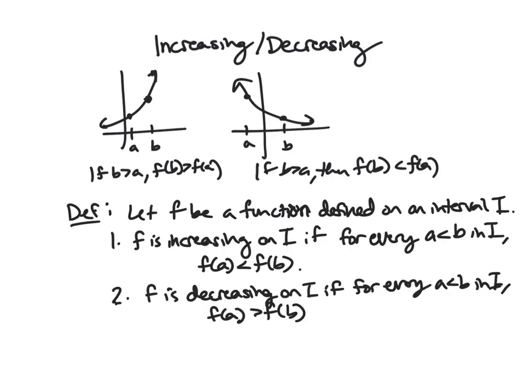So here we'll just collect this officially. If f is defined on an interval I, then it's increasing if for every pair of numbers where B is greater than A, f of B is greater than f of A. So again, move right we move up, and then it's decreasing if we move right and move down.